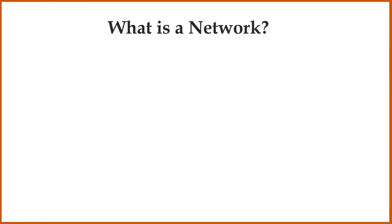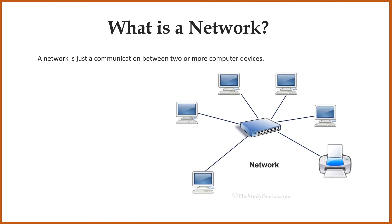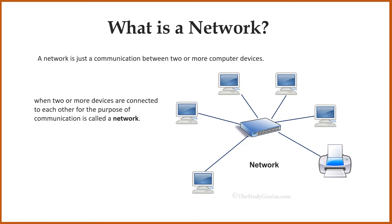So what is a network? A network is just a communication between two or more than two computers. When two devices or more than two devices are connected to each other for the purpose of communication, then it is called a network. There are many different types of networks available. You have to understand, network is not the only means internet. Yes, the internet is also a network, but there are many different ways we can create a network.